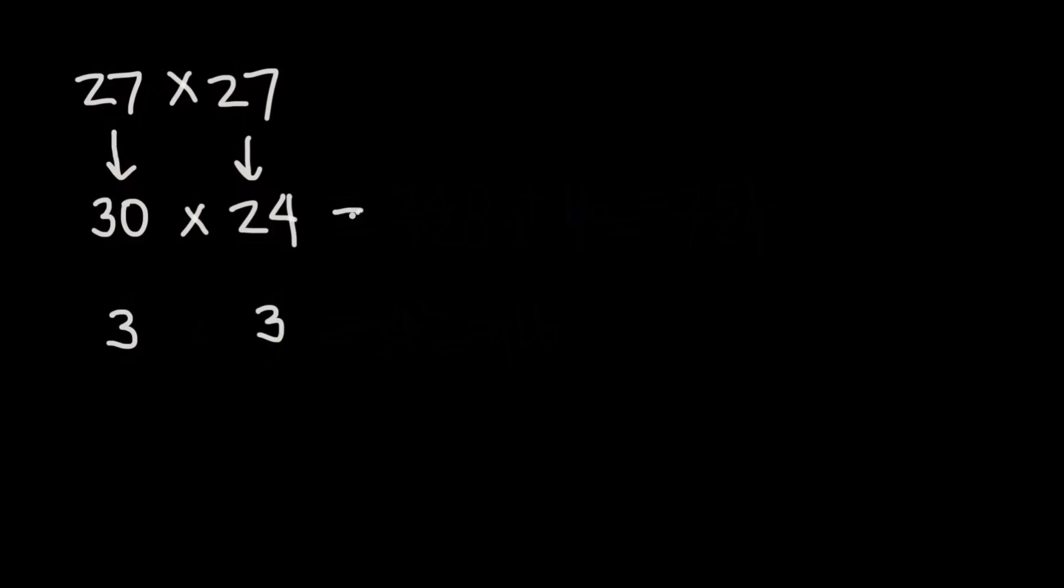So 3 times 24 is 72 and then that 0 that we ignored we just add back on to the end. So 30 times 24 is 720. So this actually is a much easier multiplication problem than 27 times 27.